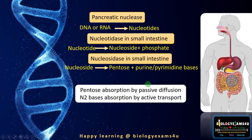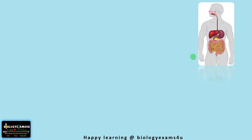Pentose sugar absorption occurs by means of passive diffusion, whereas nitrogenous bases are absorbed by means of active transport. Now let us understand the absorption of water, other electrolytes, vitamins, etc.